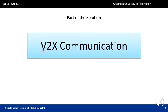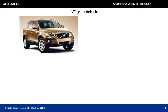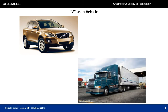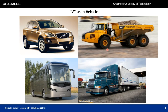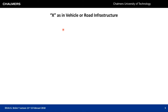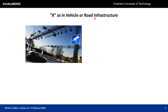Part of the solution is V2X communication. V stands for vehicle — it could be an ordinary car, a truck, a bus, or construction equipment and other specialized vehicles that drive on roads or in some confined area. All of these vehicles require traffic safety. X could be another vehicle or road infrastructure.